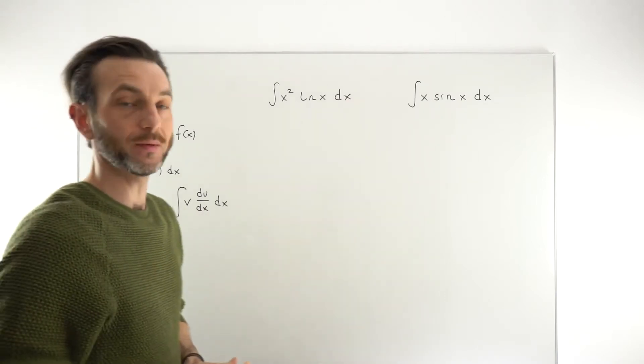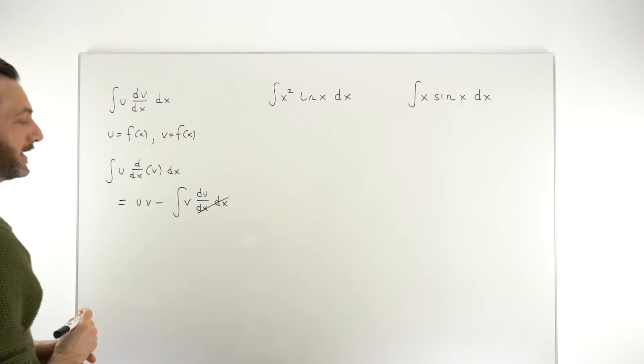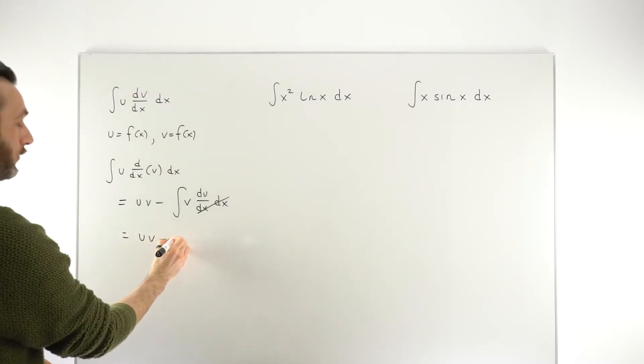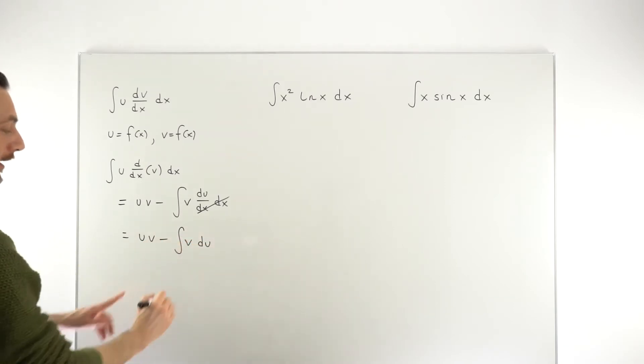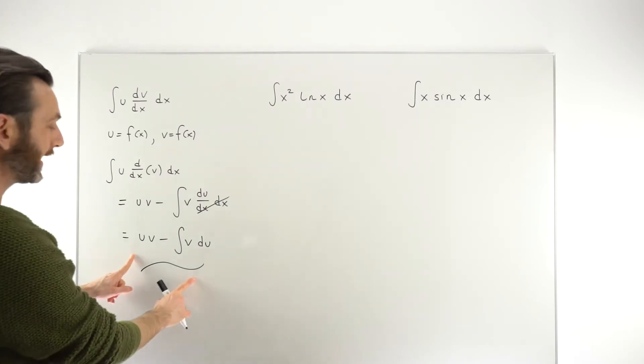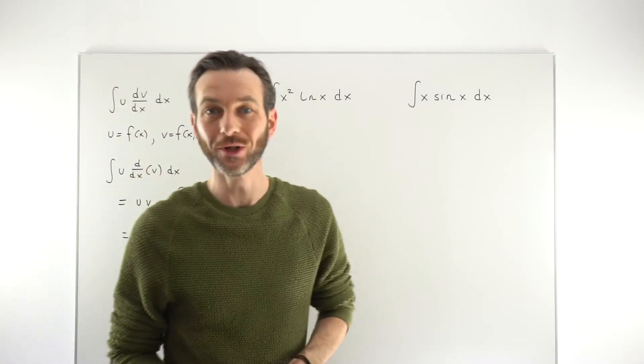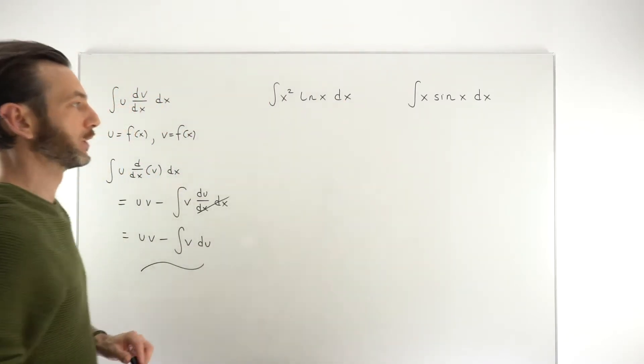One way you could kind of simplify that is crossing out these dx's, if you like, as an abbreviated version, just think of it as uv minus the integral of v du. That's probably a more compact way to think of it. So again, even in this more compact form, it is still a little weird looking at first. So let's just apply that idea to actually solving, evaluating these two integrals.